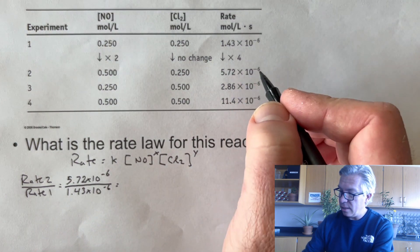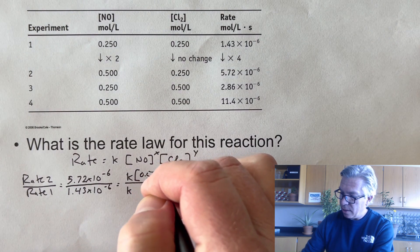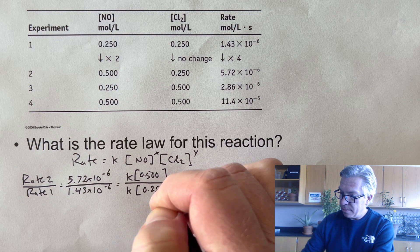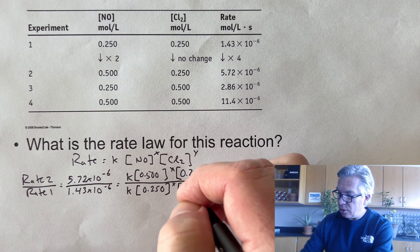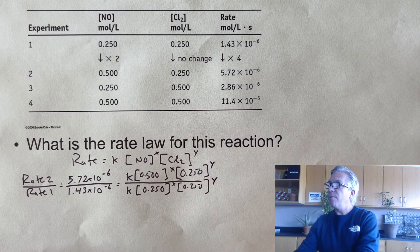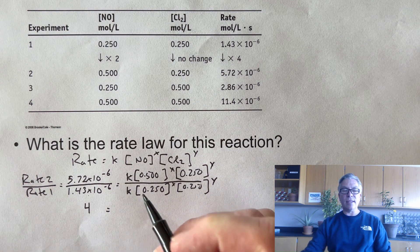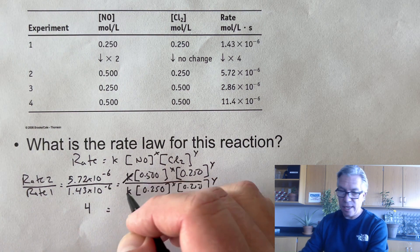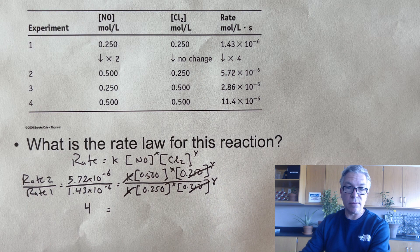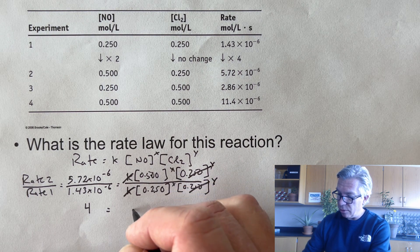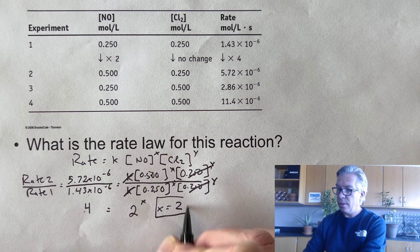Simplifying: this ratio is 4. K over K cancels. The Cl2 concentrations are equal so the Y term cancels. That leaves 4 = (0.5/0.25)^x = 2^x, so x must equal 2. It's confirmed as second order with respect to NO. Now pause the video and try to find the order with respect to Cl2, using experiments one and three — where NO stays constant while Cl2 changes.